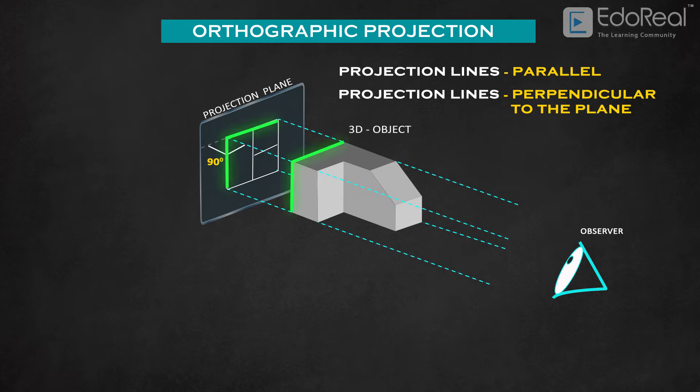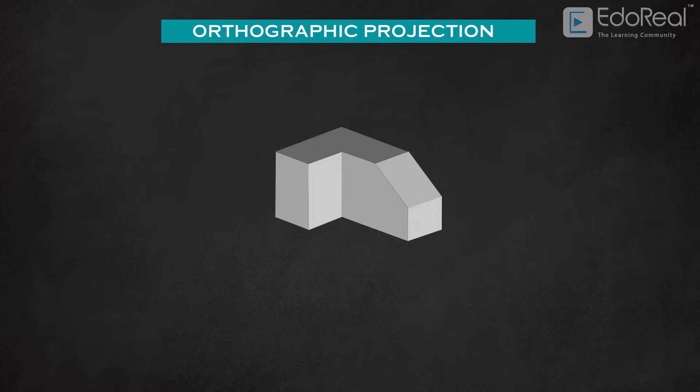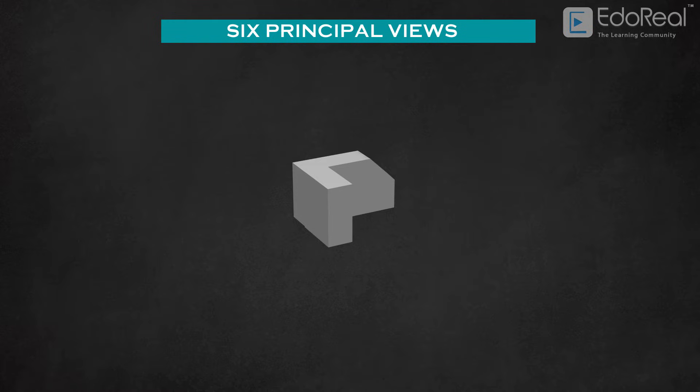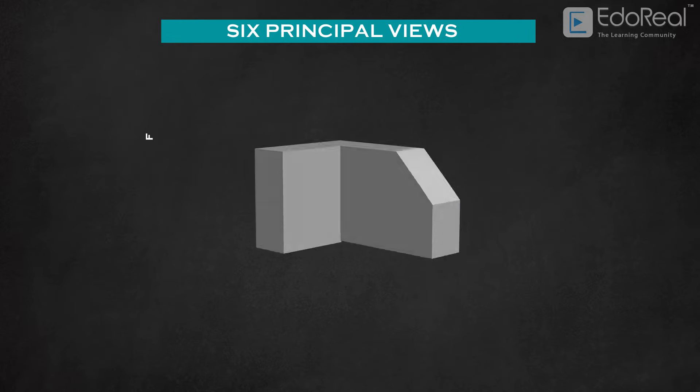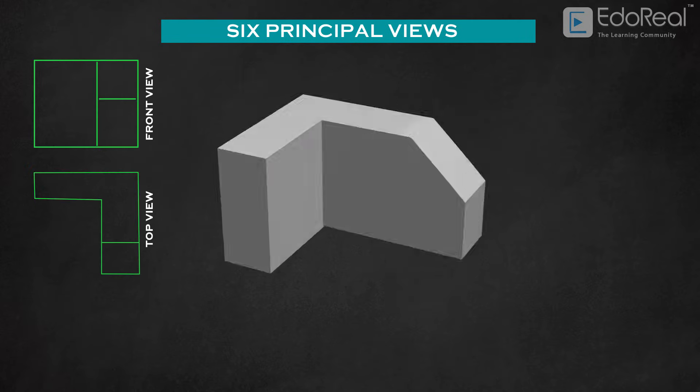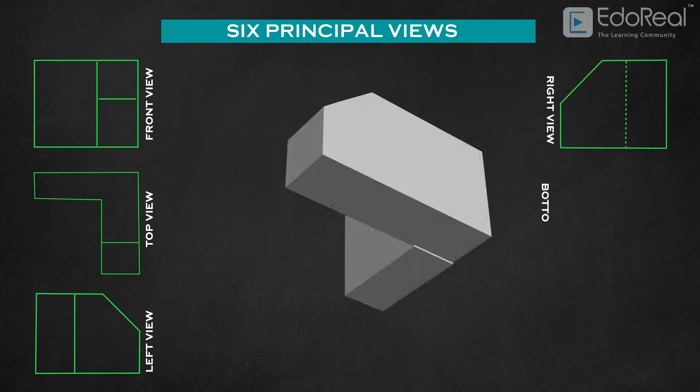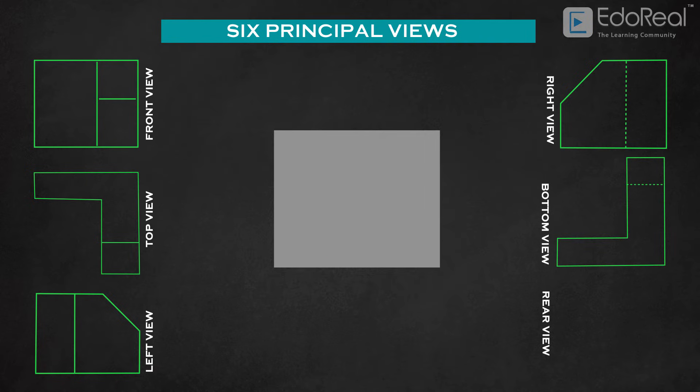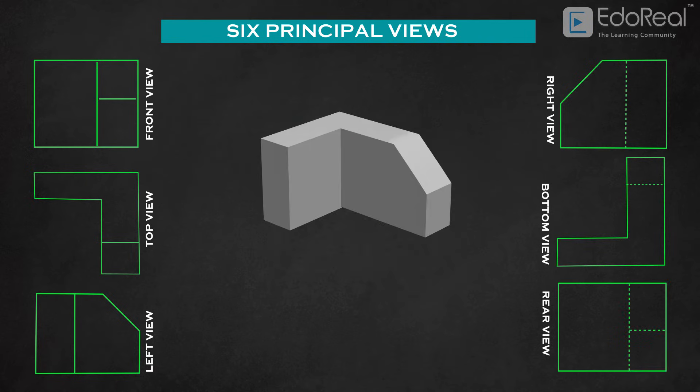By this projection, the true dimensions of the object will be preserved. Every three-dimensional object contains six sides: front side, top side, left side, right side, bottom side, and back side. So six views are possible for a three-dimensional object.